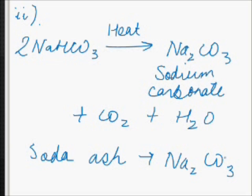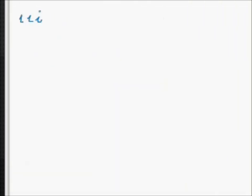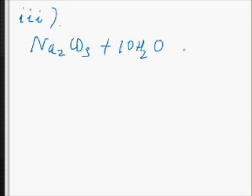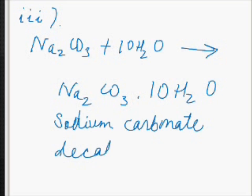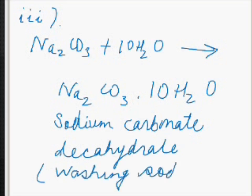In the third step, anhydrous sodium carbonate (soda ash) is dissolved in water and recrystallized to get washing soda crystals containing 10 molecules of water of crystallization — Na2CO3·10H2O — which is sodium carbonate decahydrate, or in simple words, washing soda. So these are the three steps in which washing soda is produced.